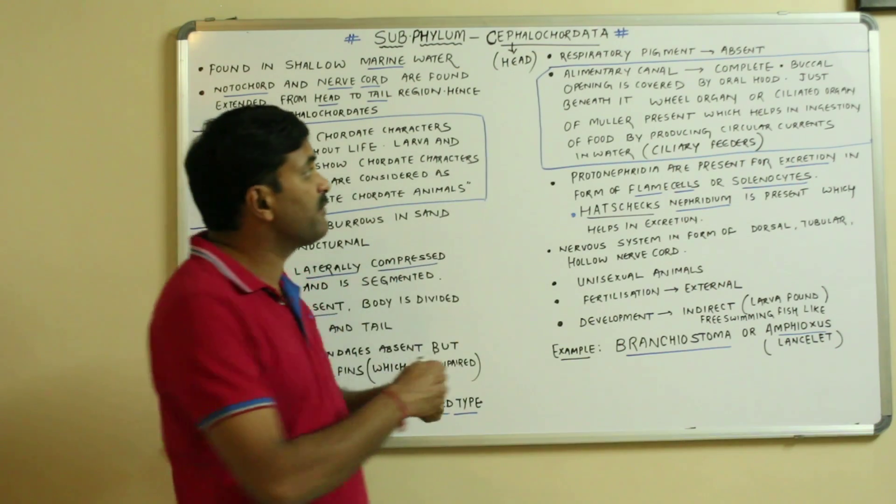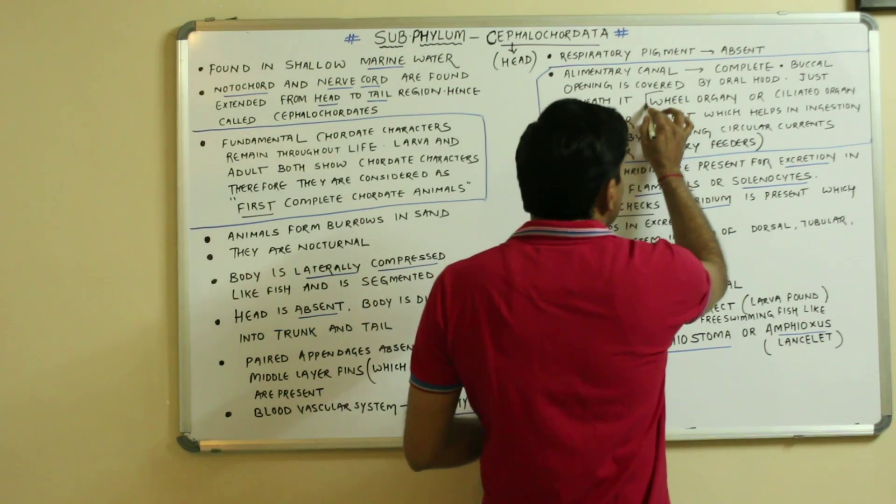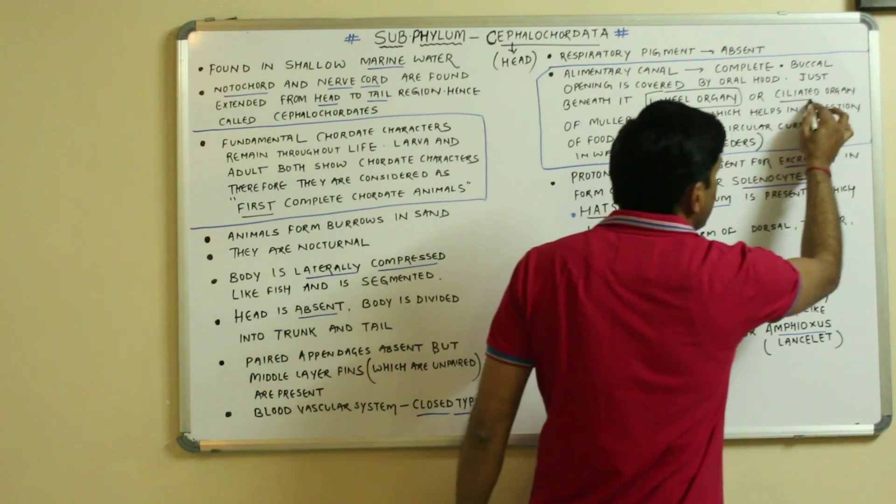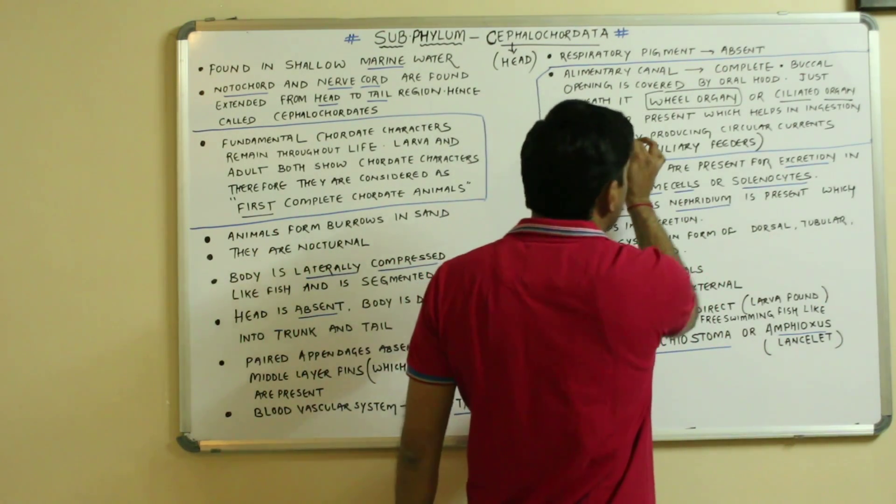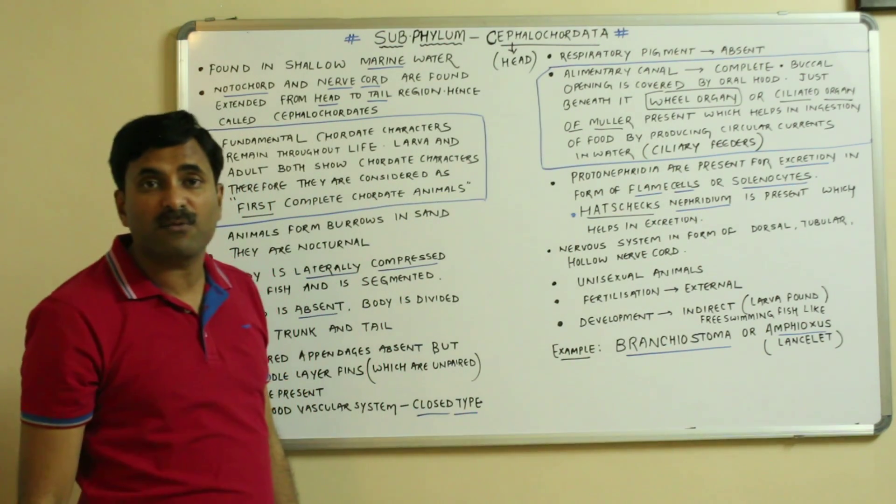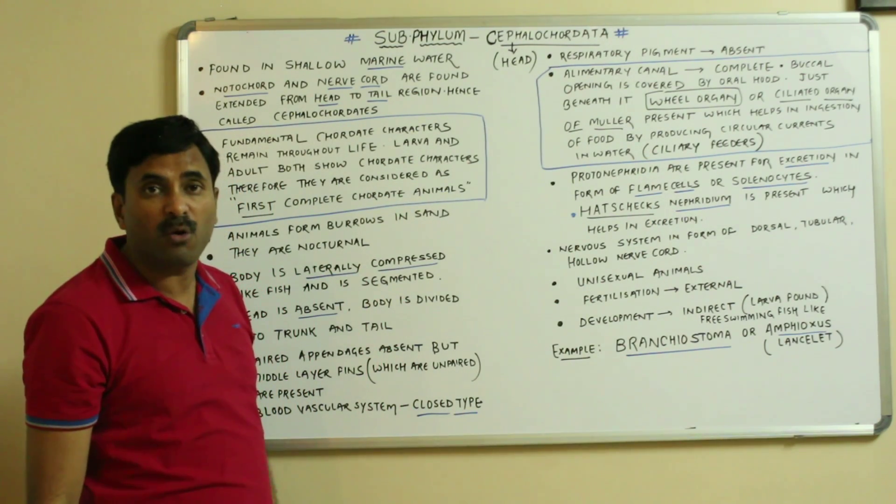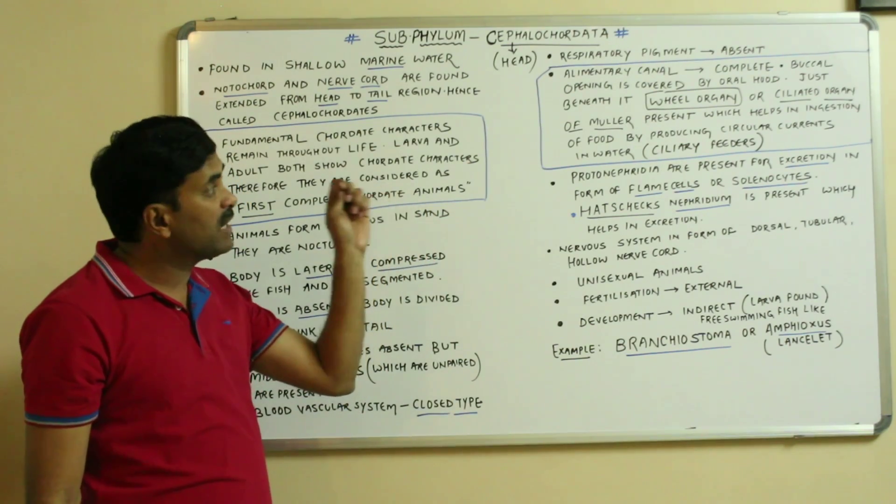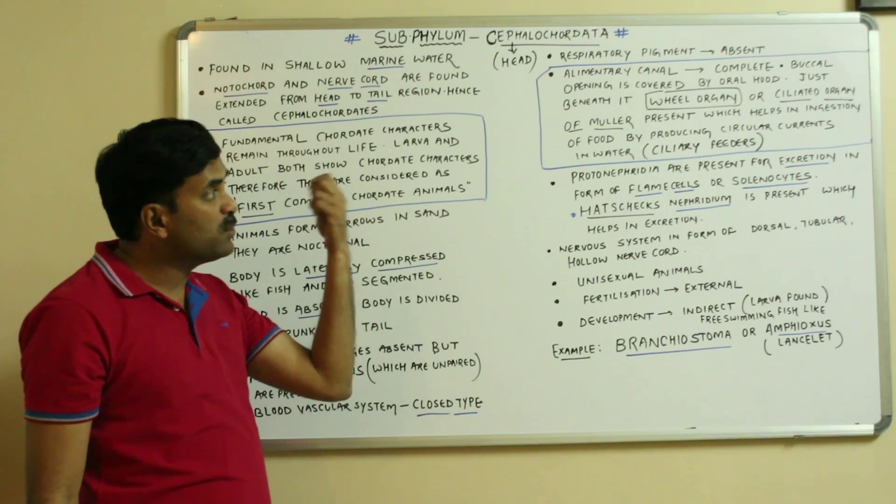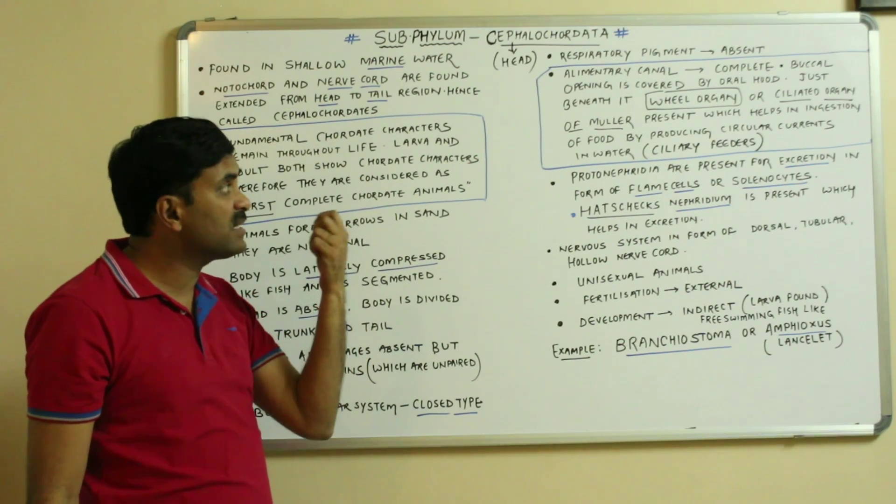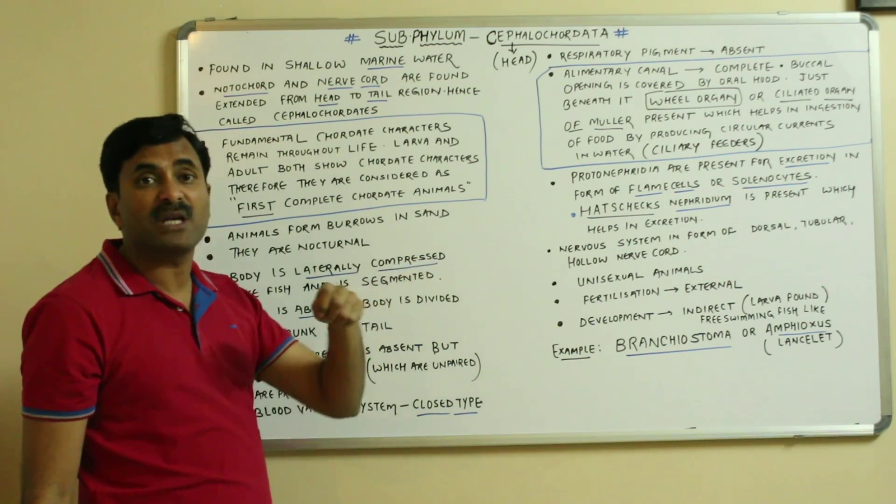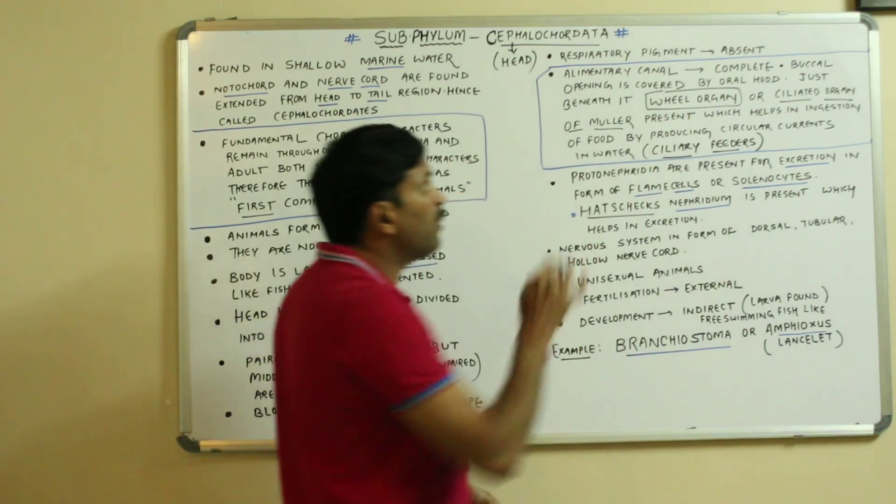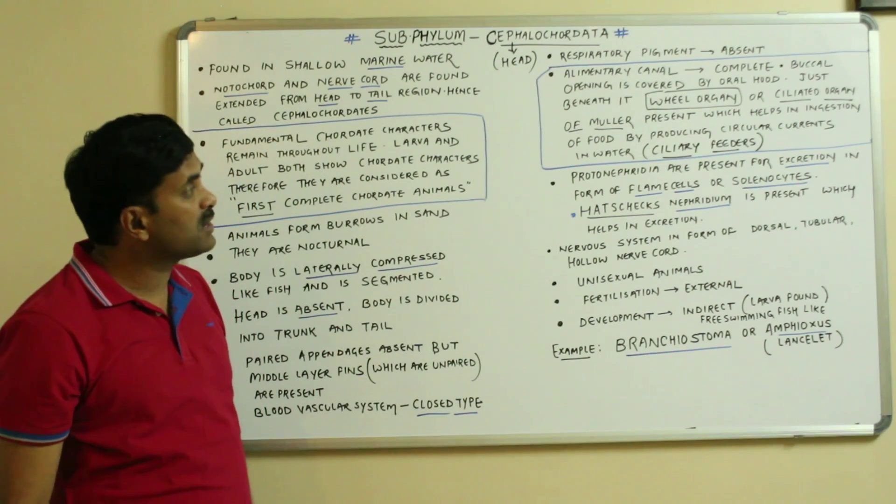Just beneath this oral hood is a very important organ known as the wheel organ, also called the ciliated organ of Muller. What is its role? It helps in ingestion of food by producing circular currents in the water body, hence they are ciliary feeders.